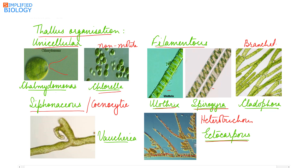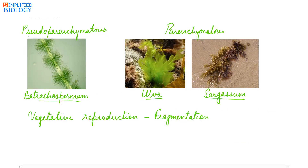Heterotrichous means they have some filaments that are prostrate — growing flat on the soil — and some that are erect. The thallus can also be siphonaceous, meaning the thallus is aseptate without any septa or partition and is multi-nucleated — example Vaucheria. Next is pseudoparenchymatous, where the cells appear parenchymatous but are not — example red alga Batrachospermum. And lastly, the thallus is parenchymatous, made up of parenchyma cells — example Ulva and Sargassum.